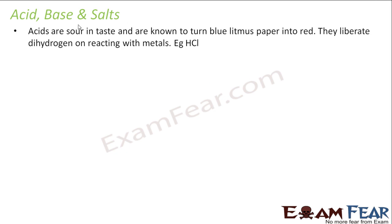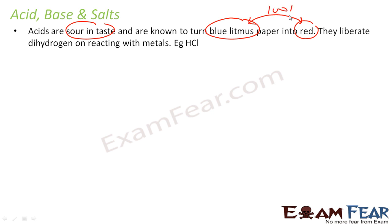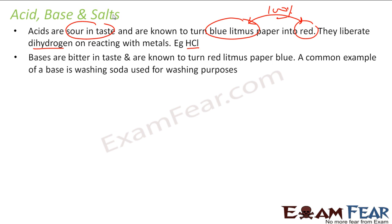What are acids? Acids are sour in taste and they turn blue litmus to red — that is the 100% guaranteed test for an acid. They also liberate dihydrogen on reacting with metals. Bases, on the other hand, are bitter in taste and they turn red litmus to blue. A good example of a base is washing soda, which we use for washing bottles.